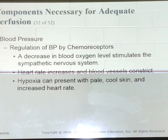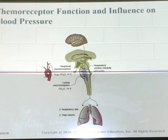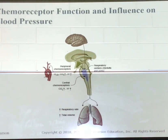Stimulation from the chemoreceptors to change the cardiovascular system occurs only when there is a significant change in oxygen or carbon dioxide content in the arterial blood. If the patient becomes hypoxic due to an acute allergic reaction, the heart rate is going to increase, and their blood pressure is going to go down — that's another reason why the heart rate increases.